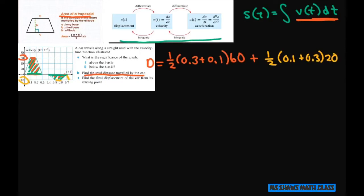So when you add this up and multiply, you get 30 times 0.4, which is 12, plus 10 times 0.4, which is 4. So this equals 16 kilometers. That's your total distance.